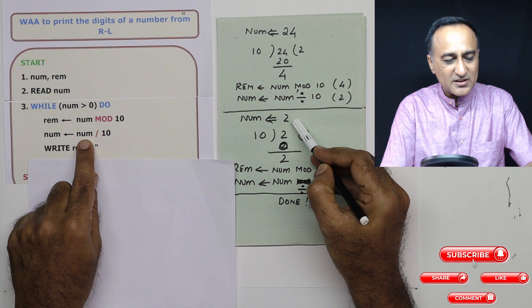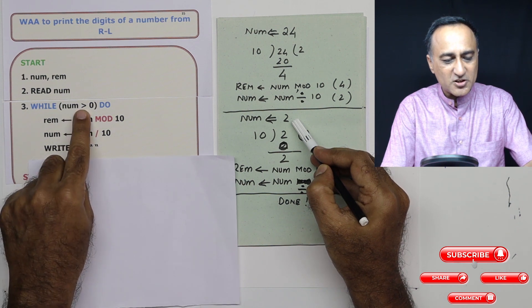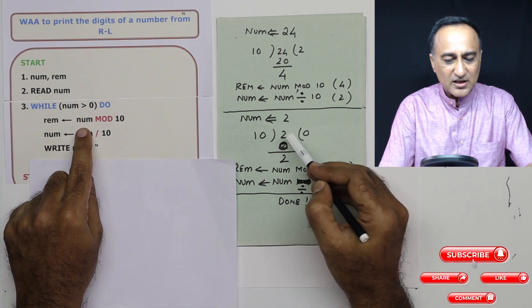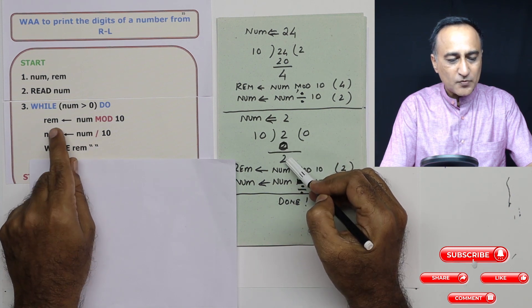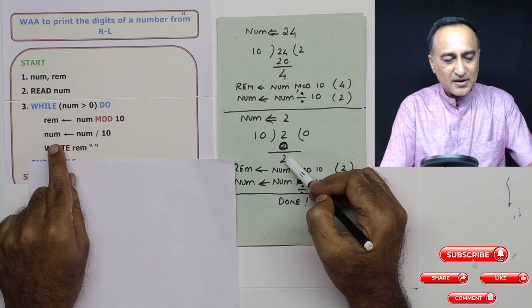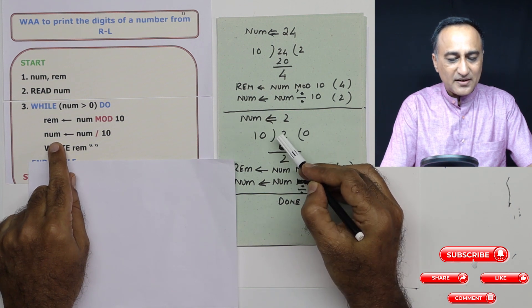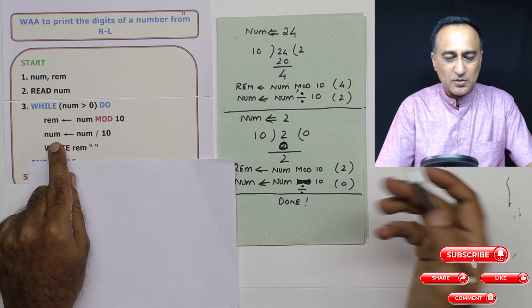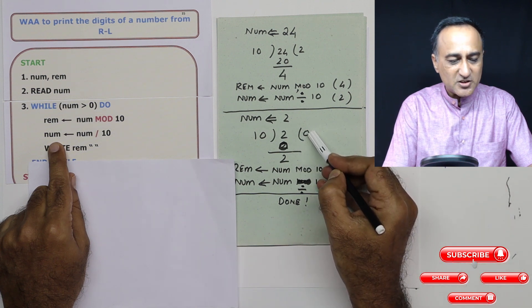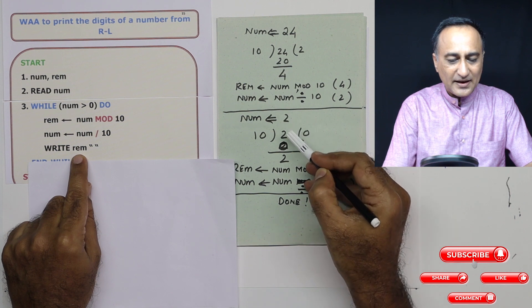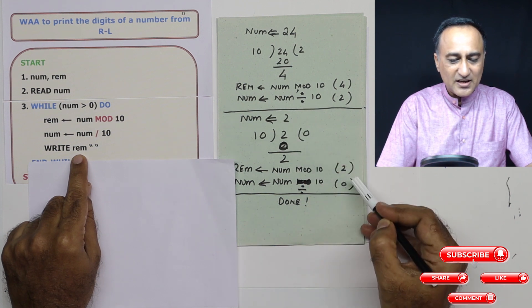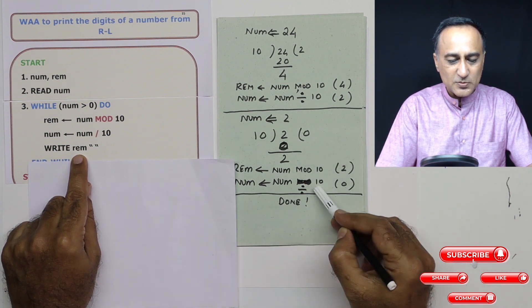Now number has become 2 after this division. 2 is greater than 0 is true. So remainder is 2 divided by 10, so remainder is 2. Number is 2 divided by 10. 2 is not divisible by 10, so the quotient is 0, number has now become 0. So I write remainder, I write 2 on the screen. Number has become 0 after this particular step.